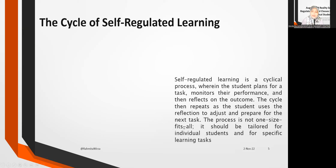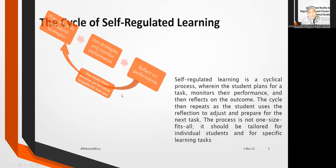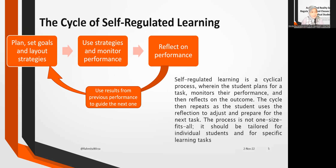Self-regulated learning is a cyclical process wherein the student plans for a task, monitors their performance, and then reflects on the outcome. The cycle then repeats as the student uses the reflection to adjust and prepare for the next task. The process is not one-size-fits-all; it should be tailored for individual students and for specific learning tasks. Students know this cycle and design it for themselves.